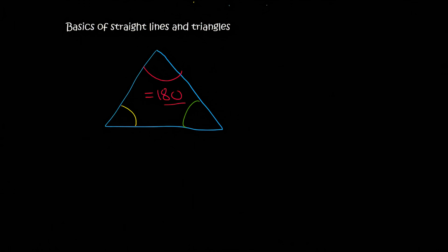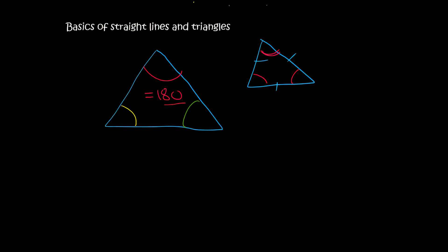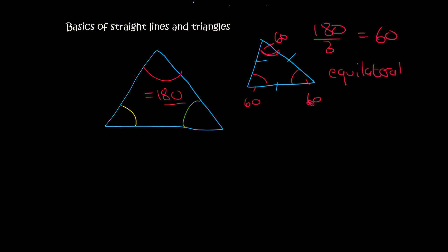Now you get three different types of triangles. The first type has lines indicating that all three sides have the same length. When three lengths are the same, then all three angles have to be the same. We also said they always have to add up to 180, so if they're all the same, you can say 180 divided by 3, which is 60. So they will all be 60 degrees. When all three sides are the same, we call that an equilateral triangle.